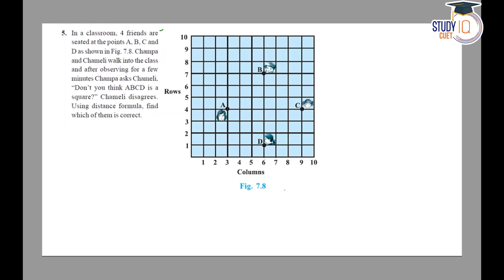As shown in figure 7.8, Champa and Chameli walk into the class and after observing for a few minutes, Champa asks Chameli: 'Don't you think ABCD is a square?' Chameli disagrees. Using the distance formula, find which one of them is correct.